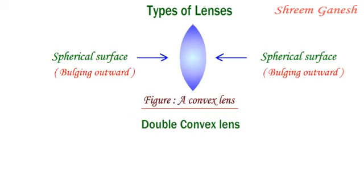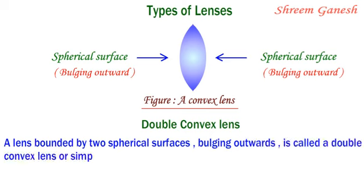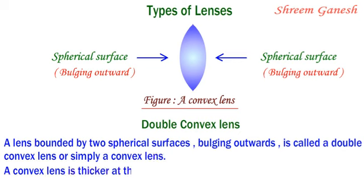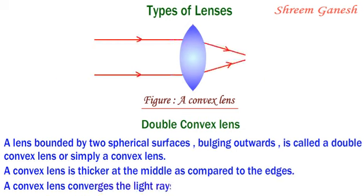Double convex lens: a lens bounded by two spherical surfaces bulging outwards is called a double convex lens, or simply a convex lens. A convex lens is thicker at the middle as compared to the edges. A convex lens converges the light rays, so it is called a converging lens.